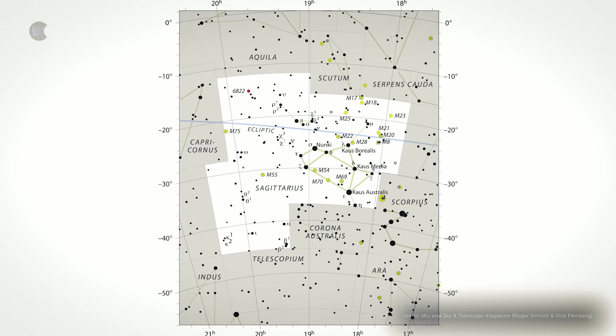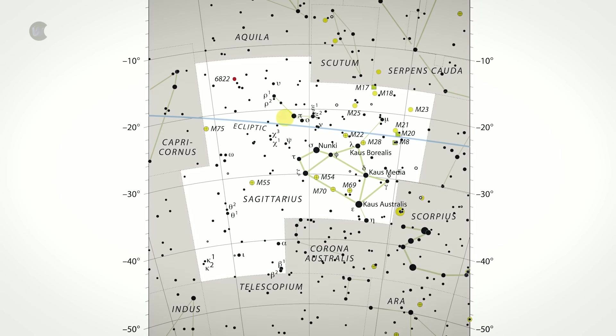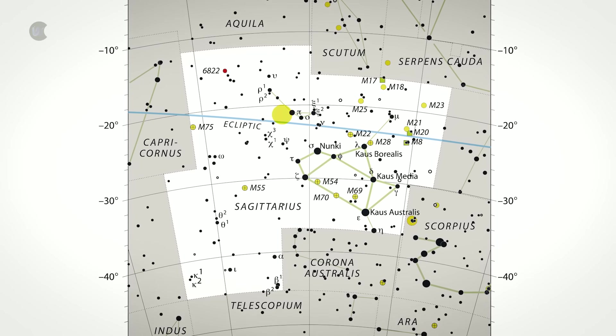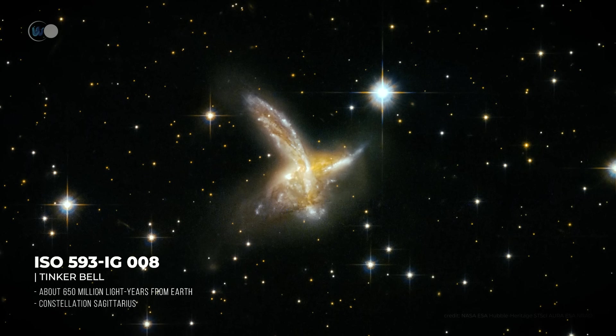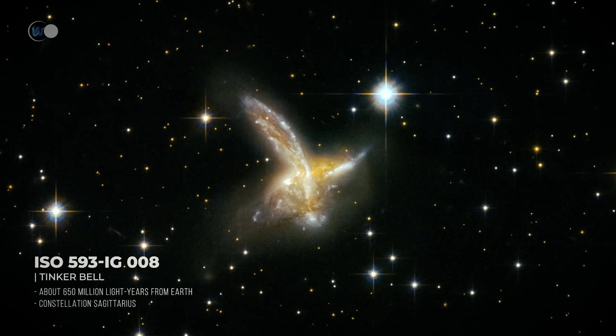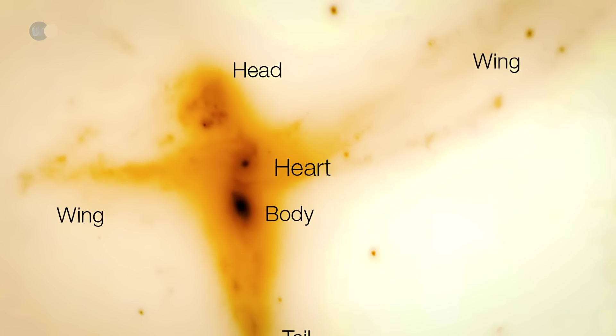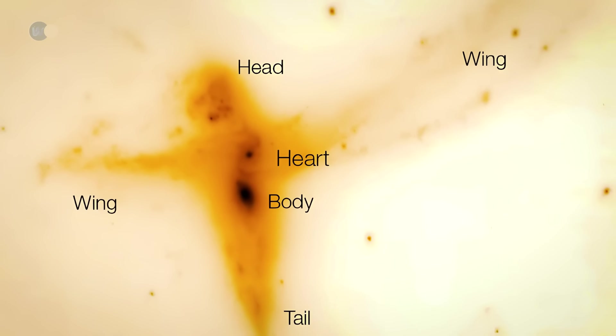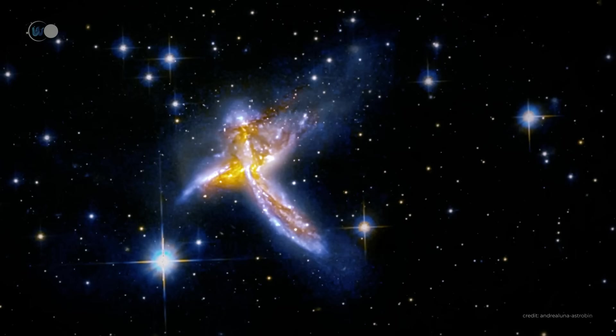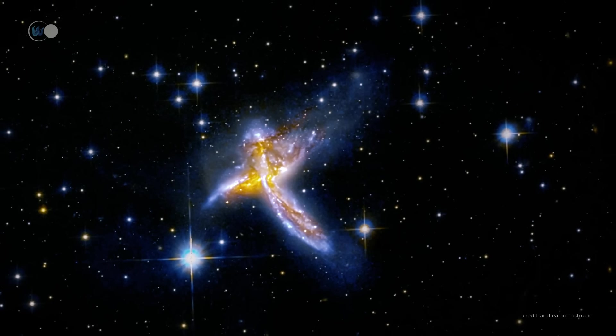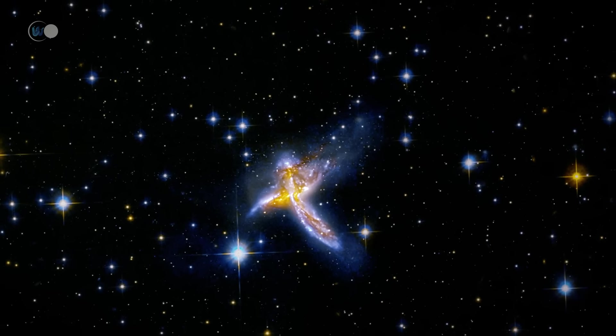In the Sagittarius constellation, one particular galaxy is shaped like a bird. With the scientific names ISO 593, IG 008, but better known as Tinkerbell, this galaxy lies around 650 million light-years from Earth. Its wings extend over 100,000 light-years, roughly the size of our own Milky Way. This marvelous star is in fact the result of the encounter between two spiral galaxies and an irregular galaxy, although scientists have long thought that only two galaxies were involved in this collision.